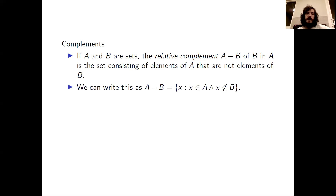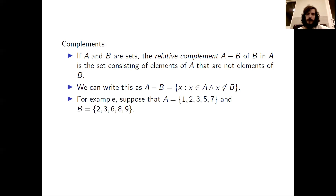We can write this more succinctly as X colon X in A wedge X not in B. That wedge is the 'and' and, again, that colon is the 'for which'. Let's again look at the two sets A and B that we've been considering for the examples on the union and the intersection. If we take the relative complement of B in A, we want to find all elements of A that are not elements of B.